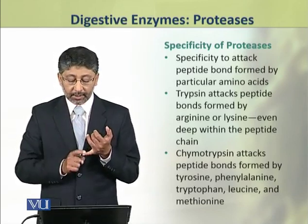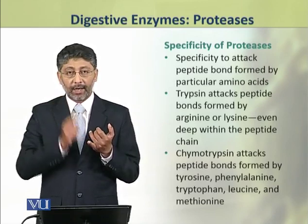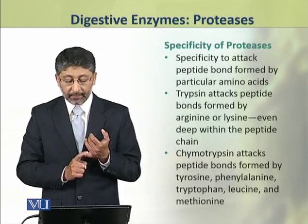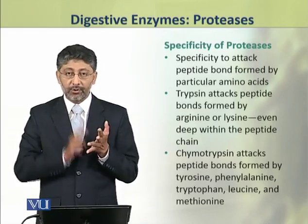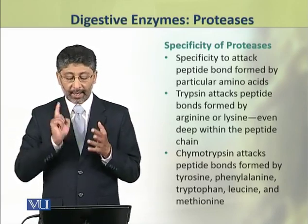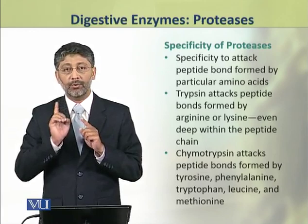Chymotrypsin is specific for peptide bonds formed by the amino acids tyrosine, phenylalanine, tryptophan, leucine, and methionine.